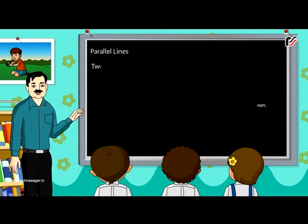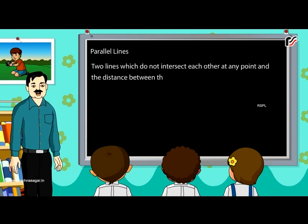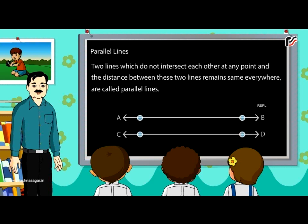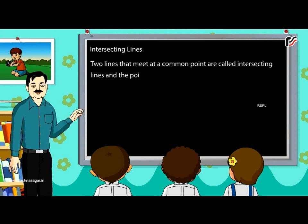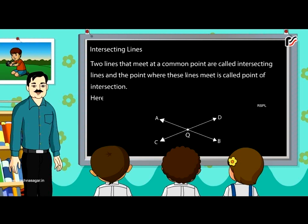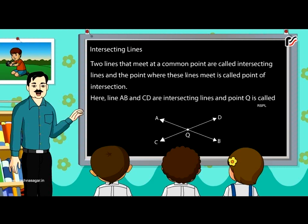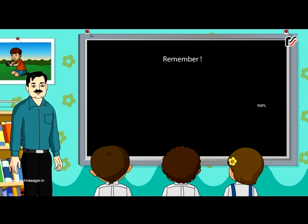Parallel lines: two lines which do not intersect each other at any point and the distance between these two lines remains the same everywhere are called parallel lines. Here, line AB is parallel to CD. Intersecting lines: two lines that meet at a common point are called intersecting lines and the point where these lines meet is called the point of intersection. Here, line AB and CD are intersecting lines and point Q is called the point of intersection. Remember, we can draw unlimited lines through a point.